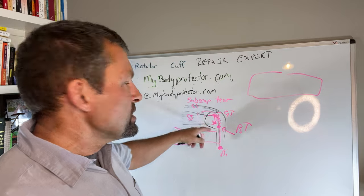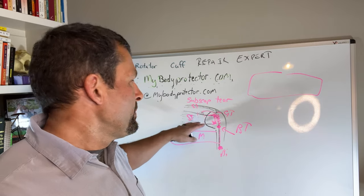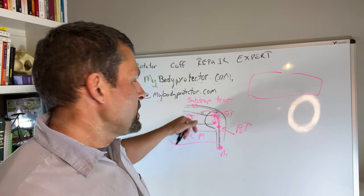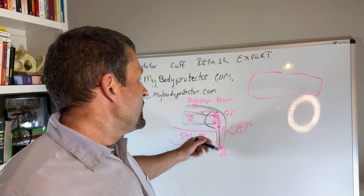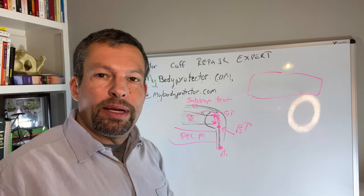Anyway, subscapularis tears, a little bit different, not the most common, but not rare. Usually open if it's the complete one and oftentimes makes it easy for us to do the biceps tenodesis.